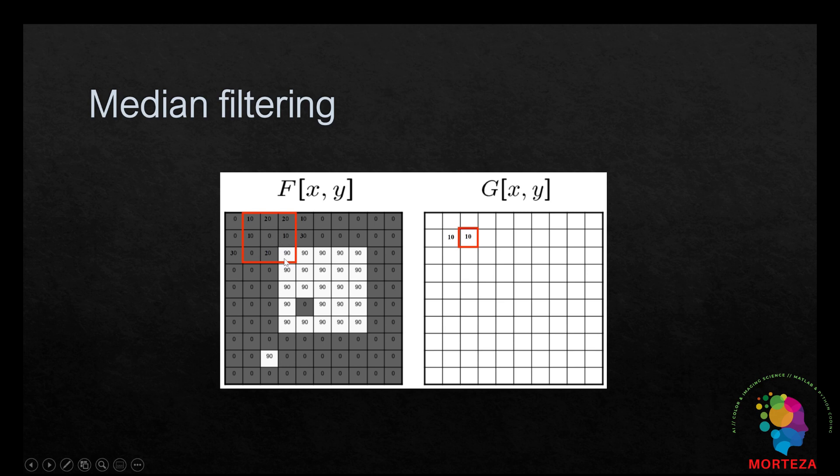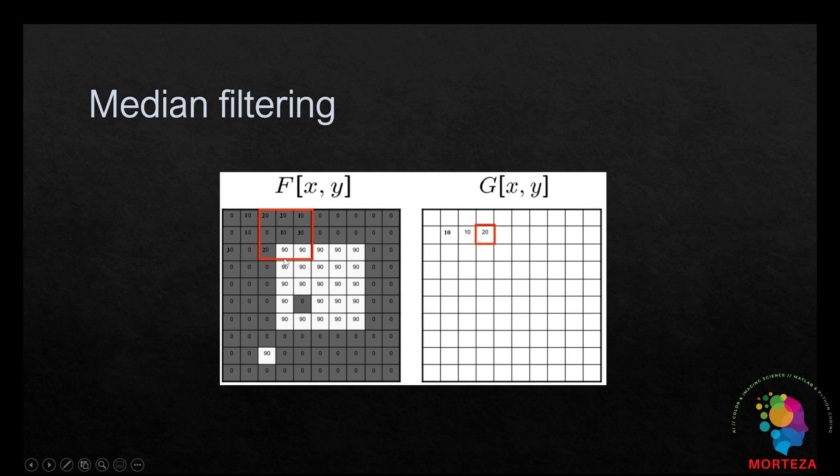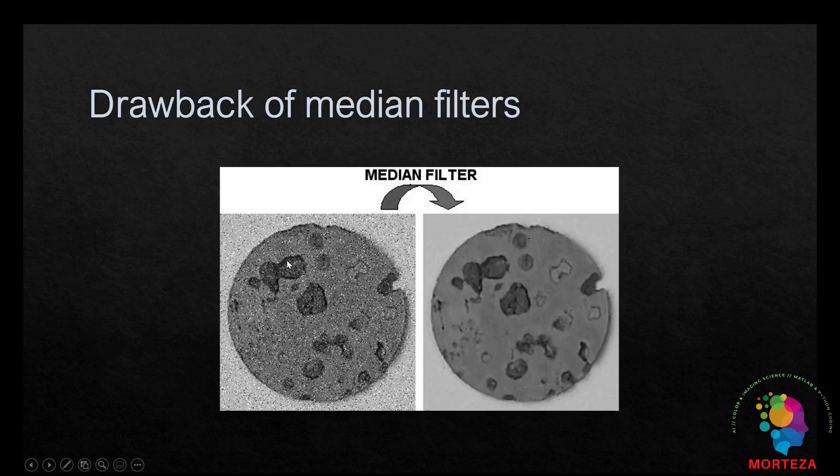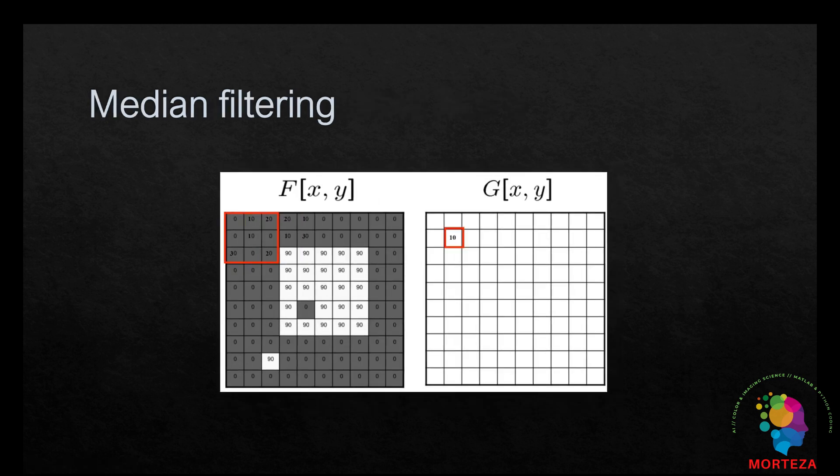And as the window moves in the image, the values are replaced by the median values of the neighbors. So this is what a median filter does to an image.